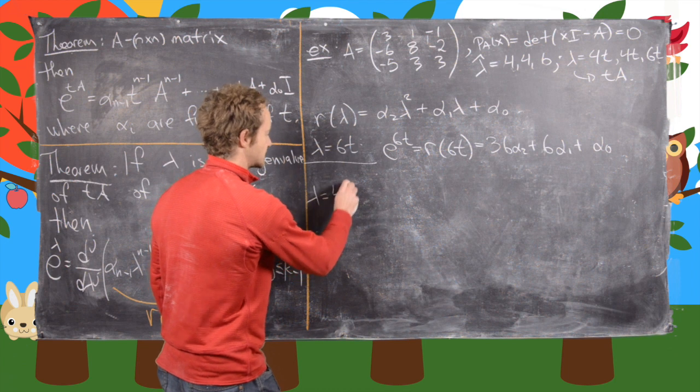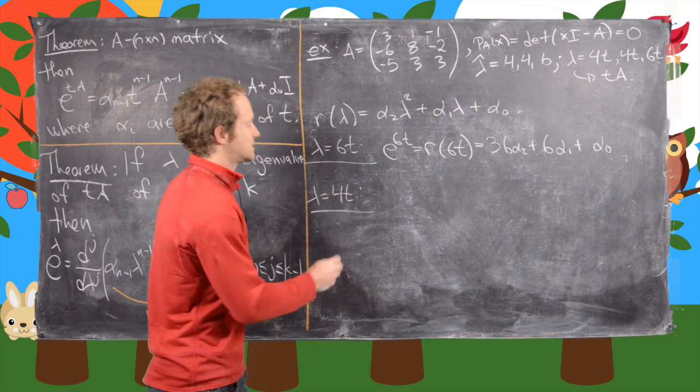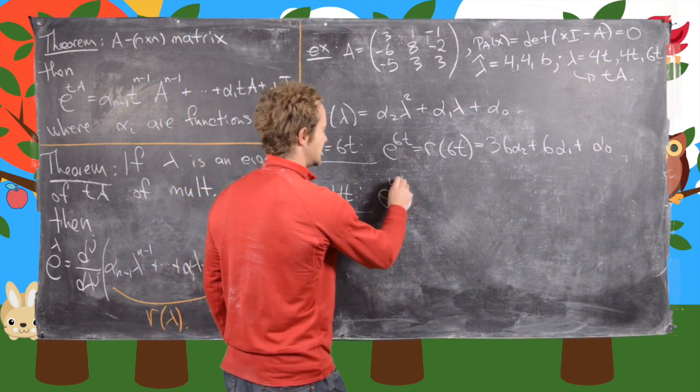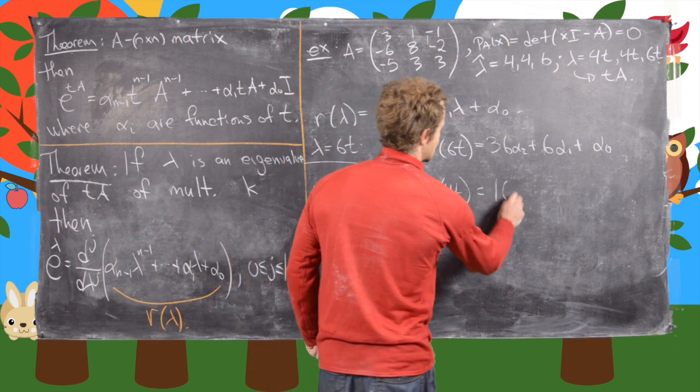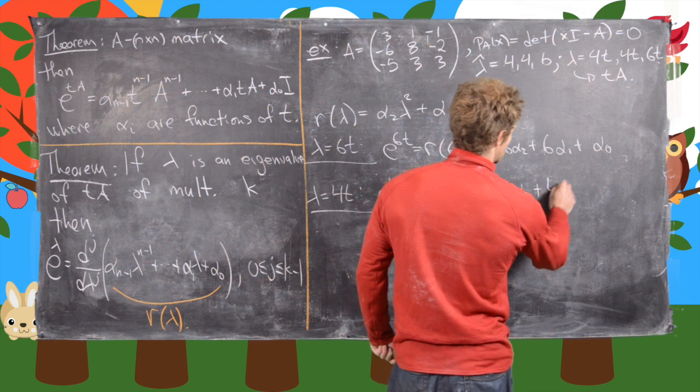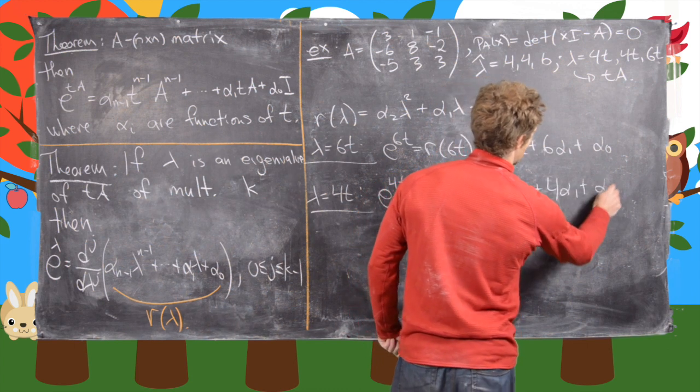So now let's go on to lambda equals 4t. So here we'll get e to the 4t equals r(4t). So that's going to give us 16*alpha_2 + 4*alpha_1 + alpha_0.